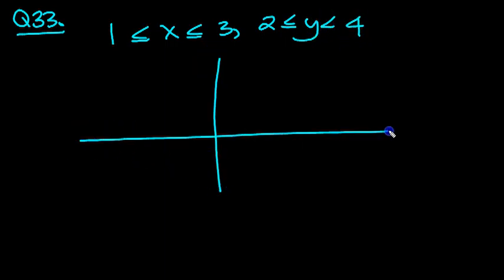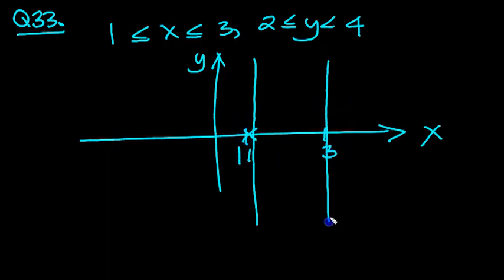So let's draw that then. Here's our x, here's our y. The x values go from 1 to 3. So there's 1 and there's 3. So it can touch both sides. So I'm going to draw a solid vertical line here at 1, and I'm going to draw a solid vertical line again at 3.